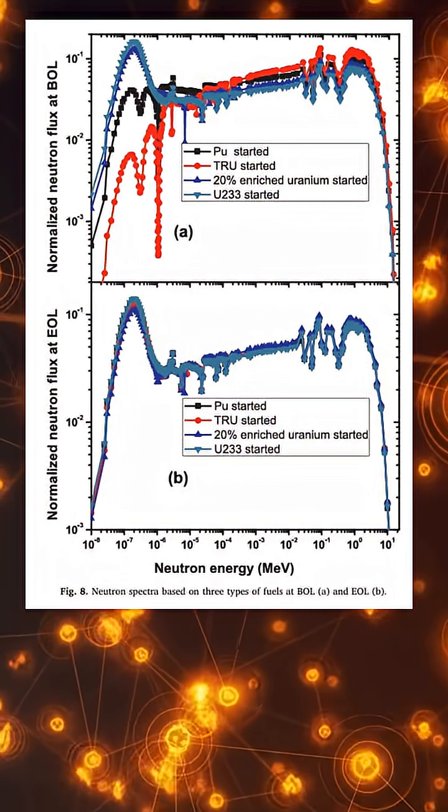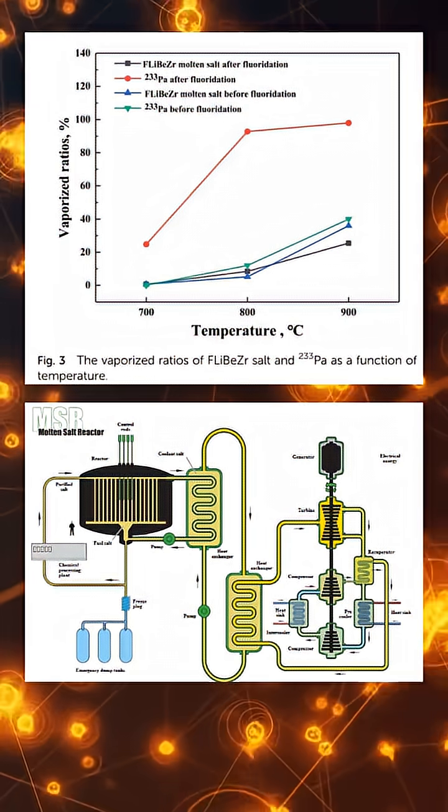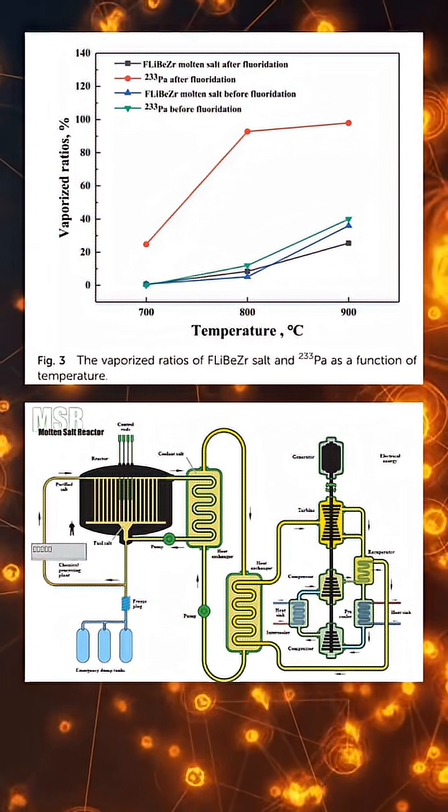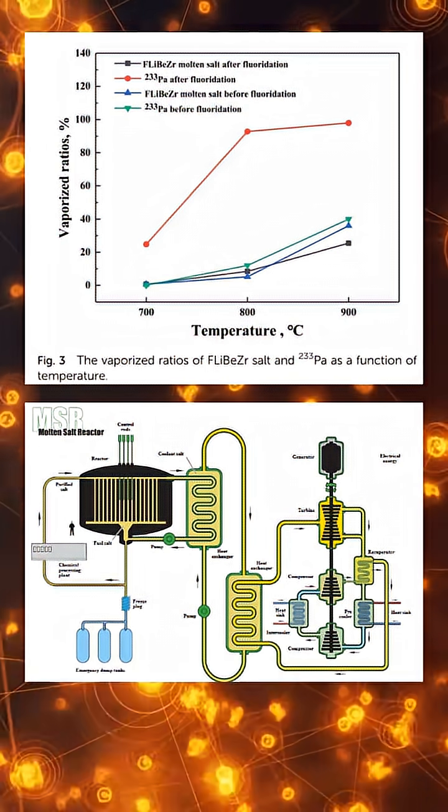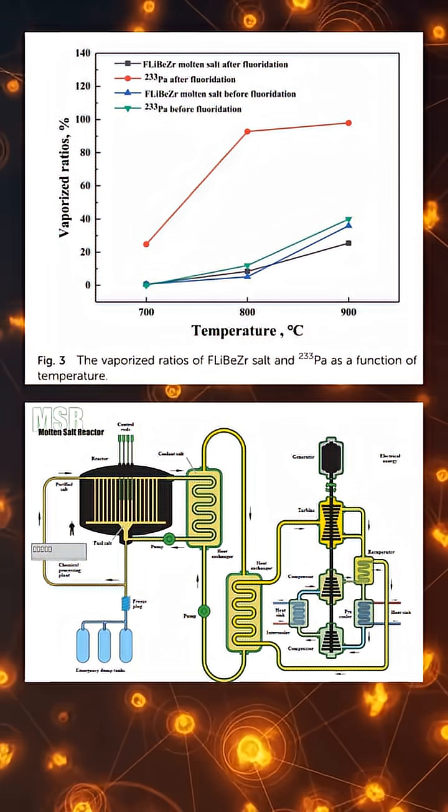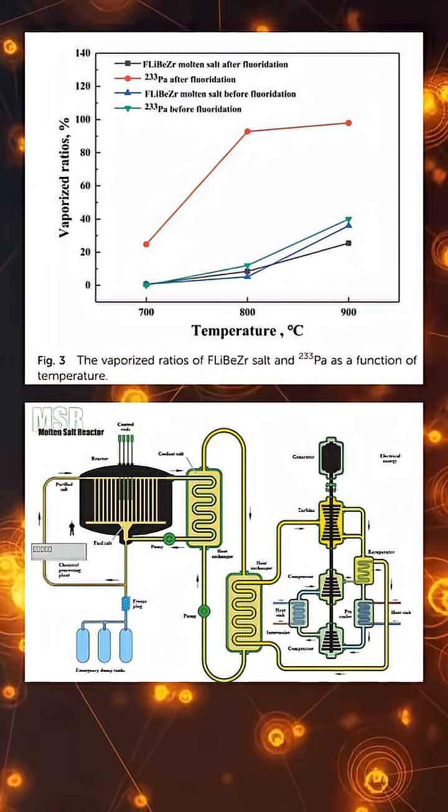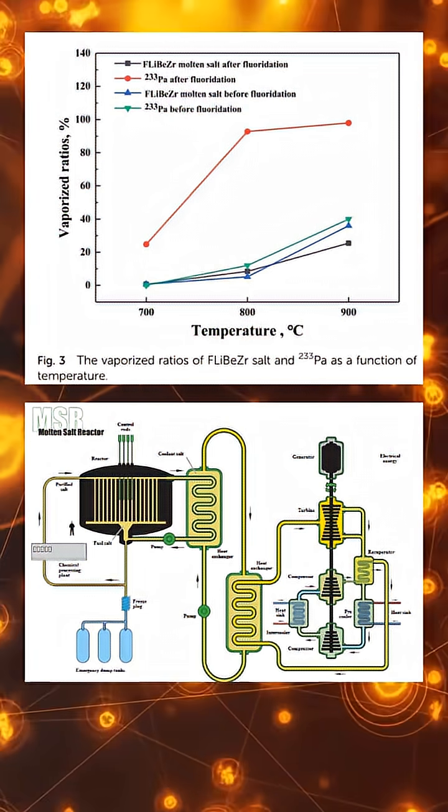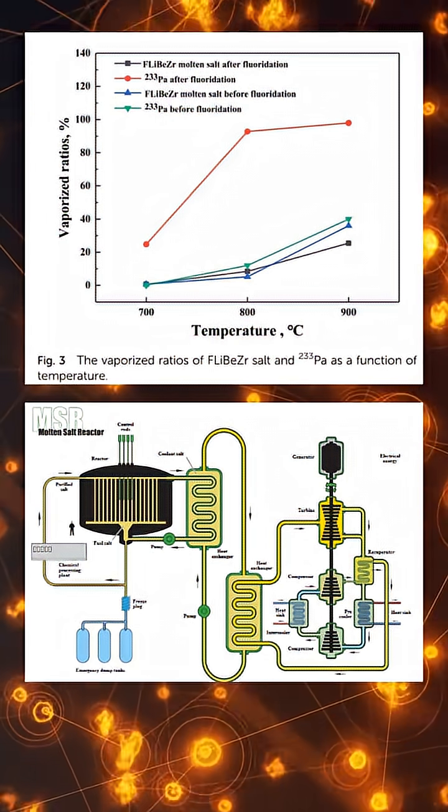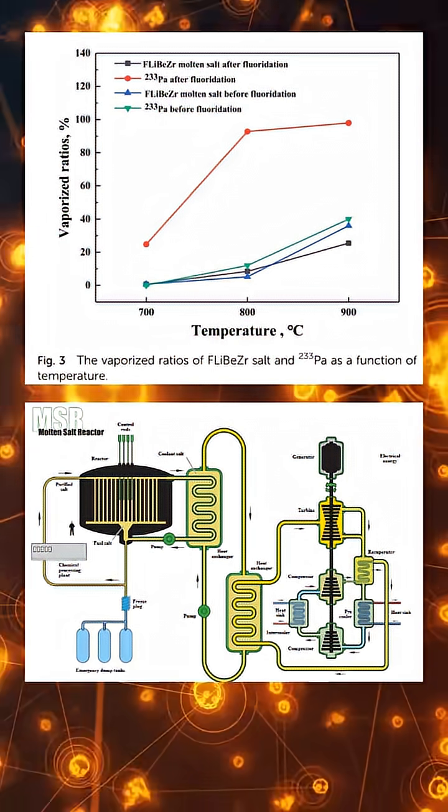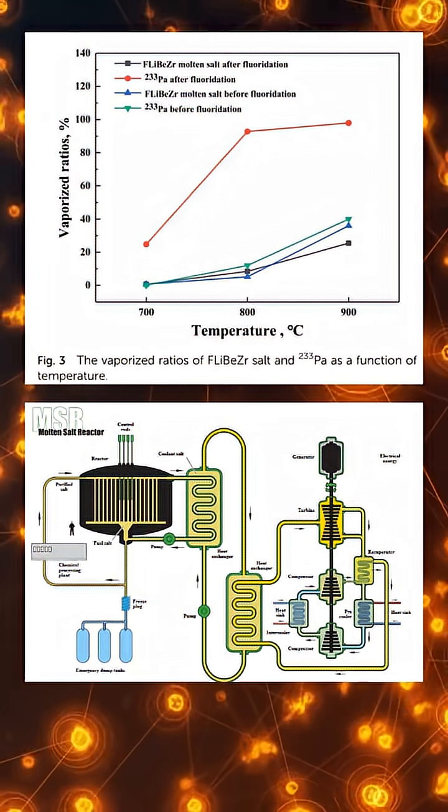Molten salt reactors are safer not because of extra systems but because of basic physics. First, they operate at low pressure, meaning there is no steam explosion risk and no hydrogen build-up like in Fukushima-type accidents. Second, the fuel cannot melt down because it is already molten. Third, molten salt reactors use passive safety. If power is lost, a frozen salt plug melts automatically, allowing the fuel to drain by gravity into safe storage tanks where nuclear reactions stop on their own.